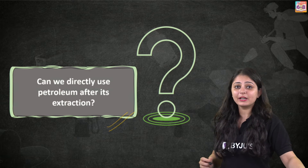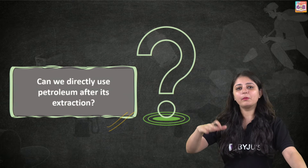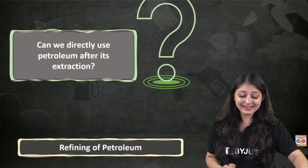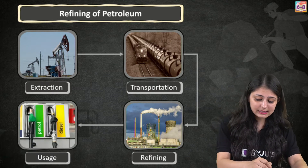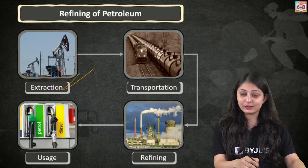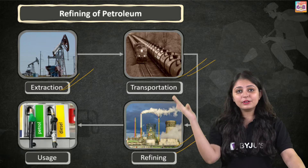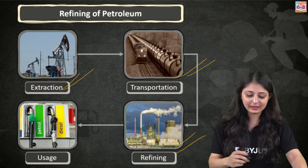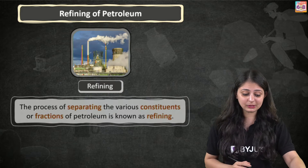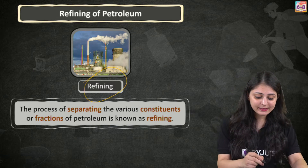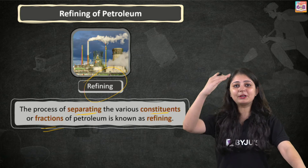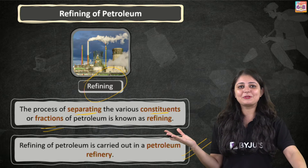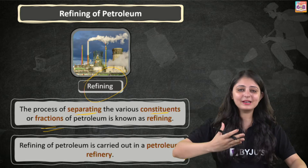Can we directly use petroleum after its extraction? After all that effort — it forms over a long time, and we extract it — can we use it directly? No, we cannot use it directly. After workers pump the crude or raw petroleum from the ground or sea, it goes to large factories called refineries. At a refinery, petroleum is refined and cleaned to make it ready to use. Refining is the process of separating various fractions of petroleum, and it is done in a petroleum refinery.